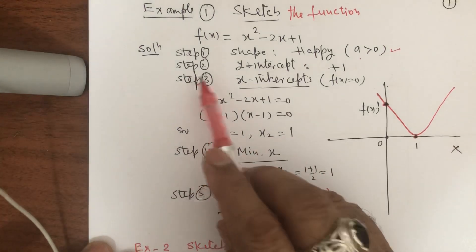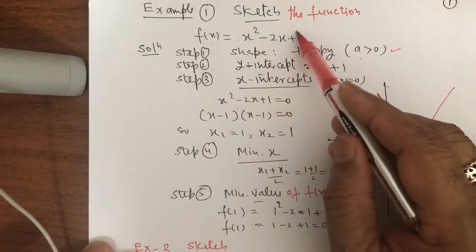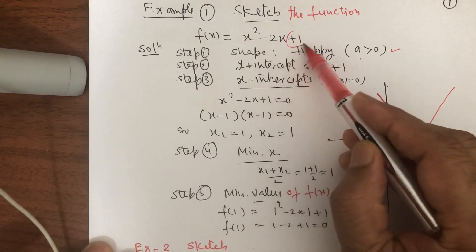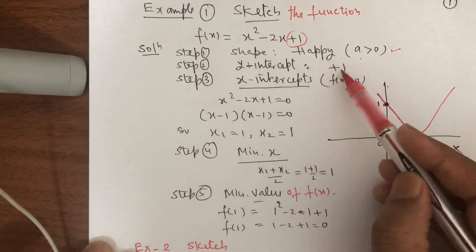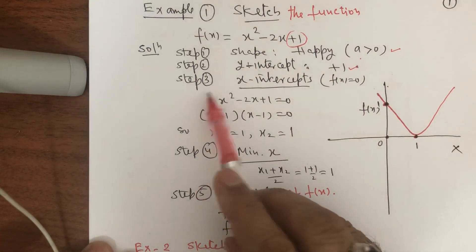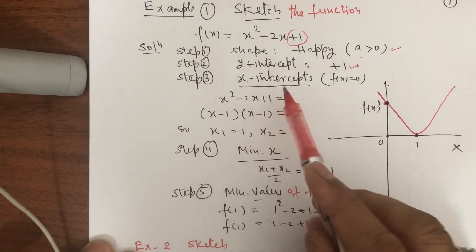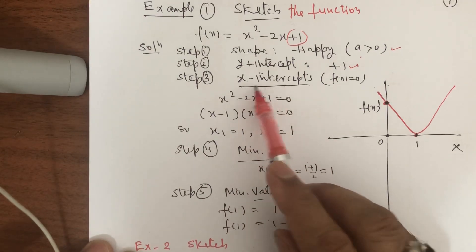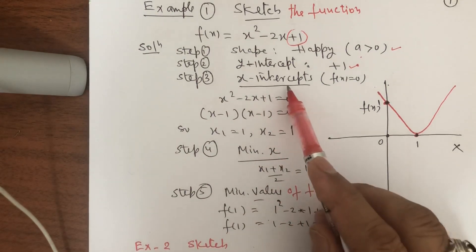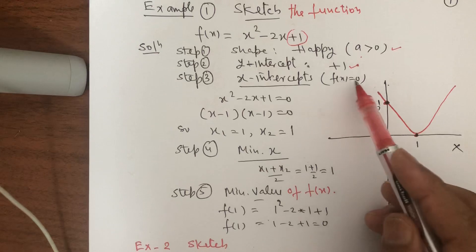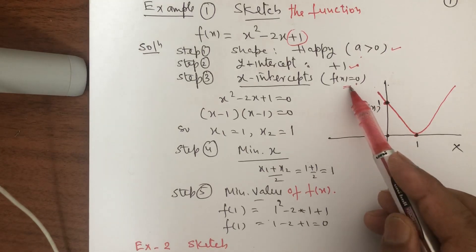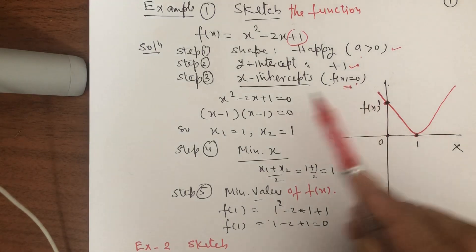Step 2: what is the y-intercept? The y-intercept depends on the constant value. This is plus 1, so the y-intercept is plus 1. Then for x-intercepts, we calculate x values by putting f(x) equal to 0. This is the condition for calculating the x-intercept.